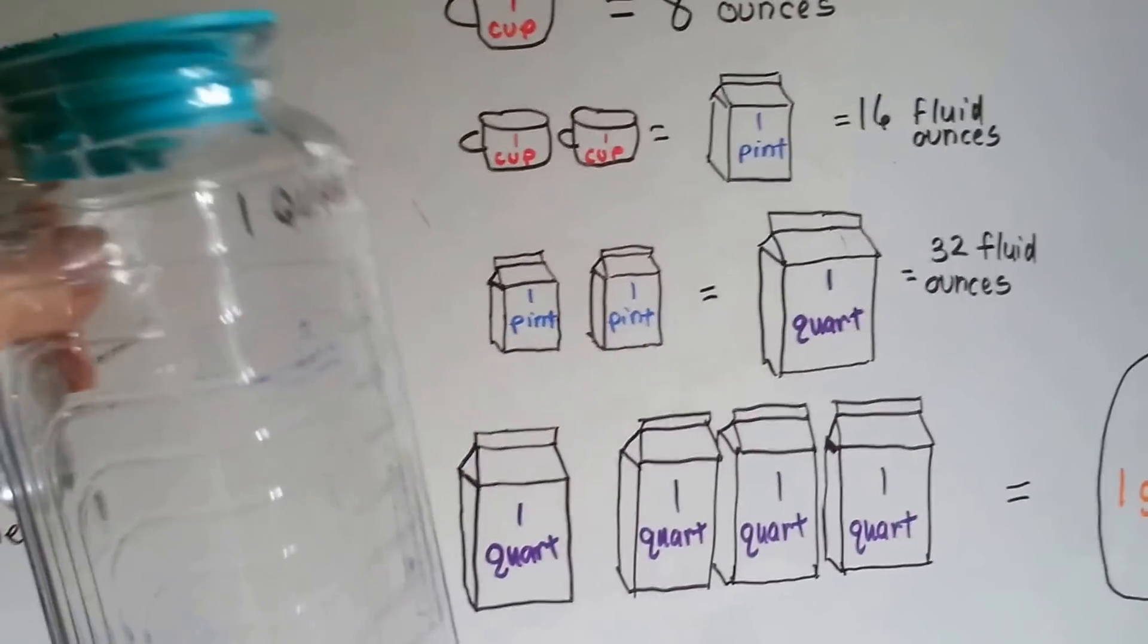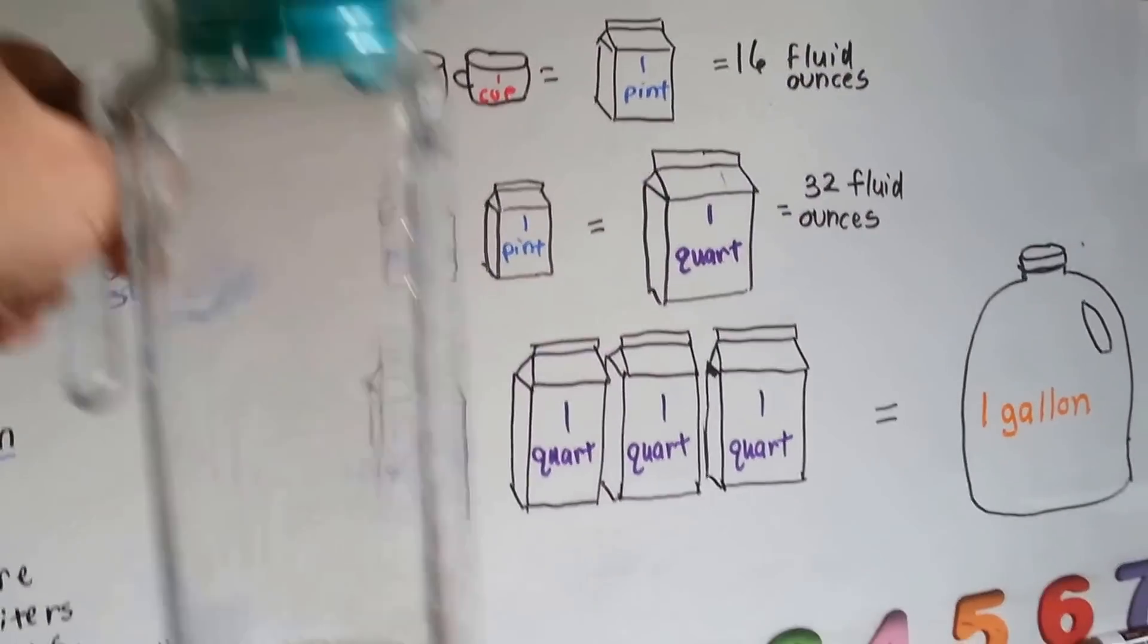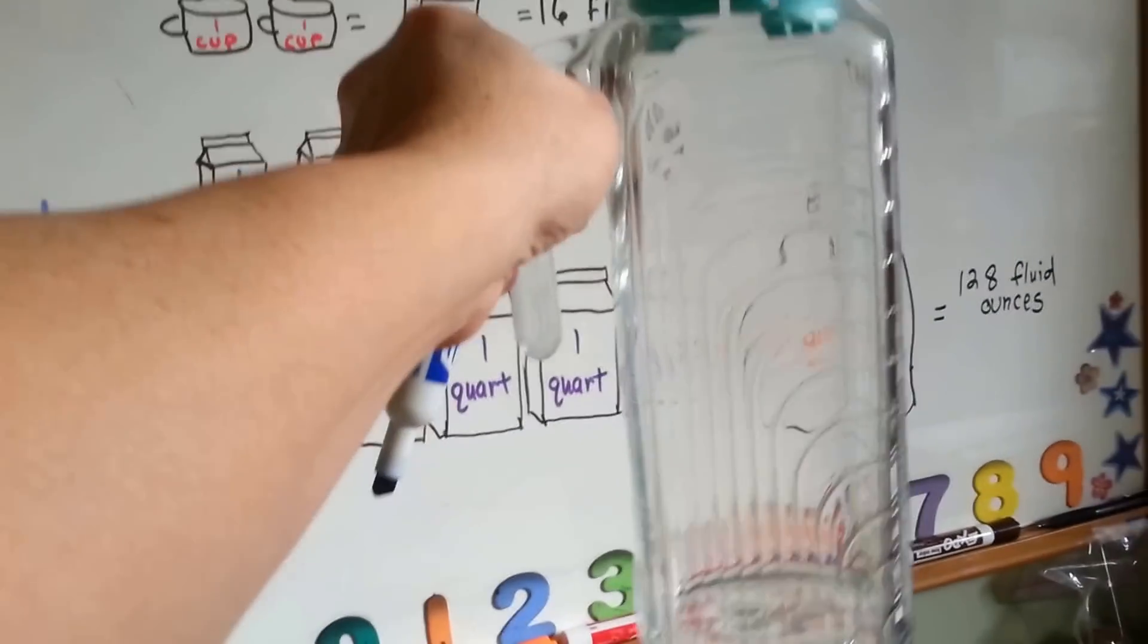I've got a glass pitcher here. This is a one-quart glass pitcher. See? There's four of these in a gallon.